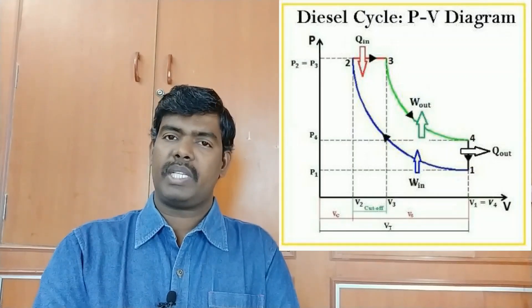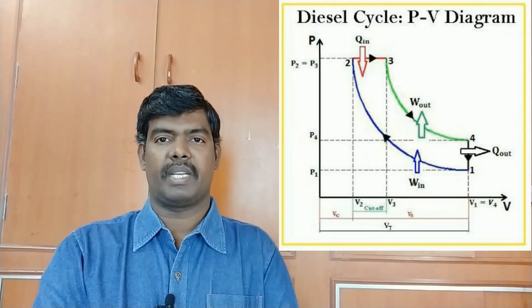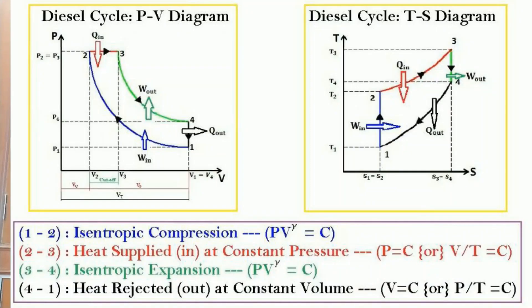Now we proceed through the derivations for each process. This is an idealized thermodynamic cycle. Note that suction and exhaust both occur at constant pressure from and to the atmosphere — technically these are two additional constant pressure processes beyond the four main ones. For process 1 to 2, isentropic compression: during compression the piston moves from bottom dead center to top dead center.